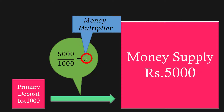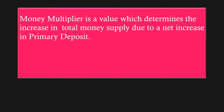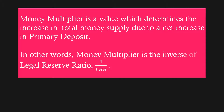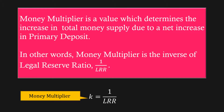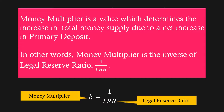Money Multiplier is a value which determines the increase in total money supply due to a net increase in primary deposit. In other words, Money Multiplier is the inverse of Legal Reserve Ratio: K = 1 / LRR, where K is Money Multiplier and LRR is Legal Reserve Ratio.